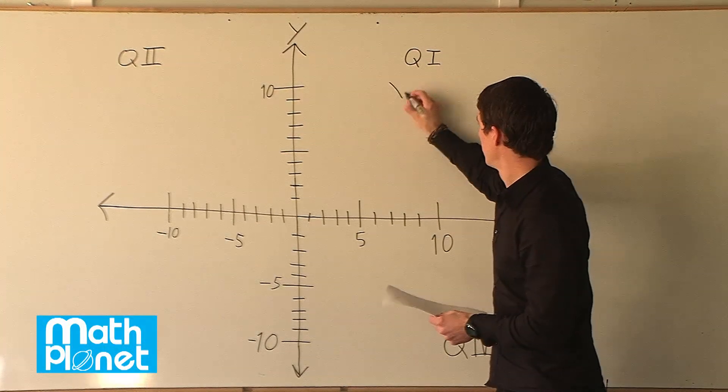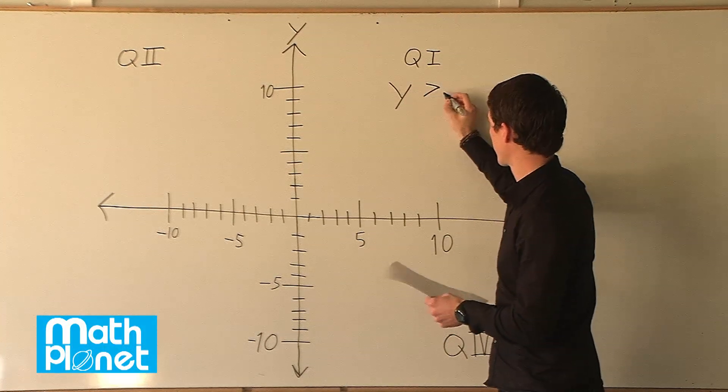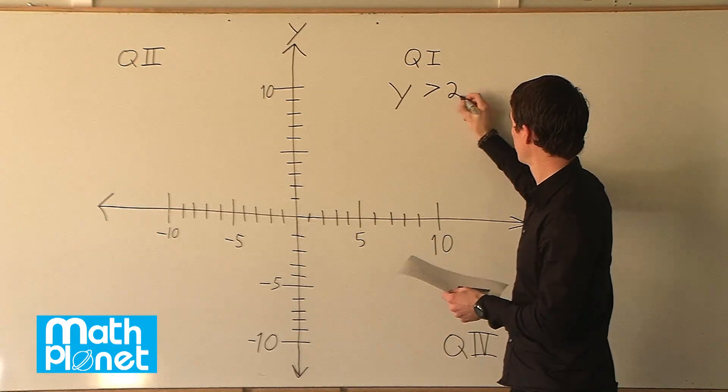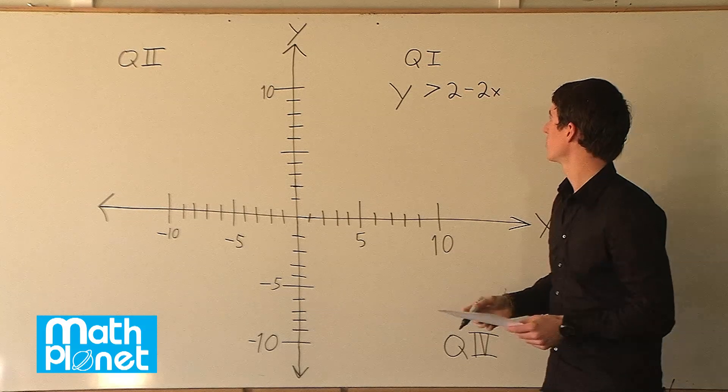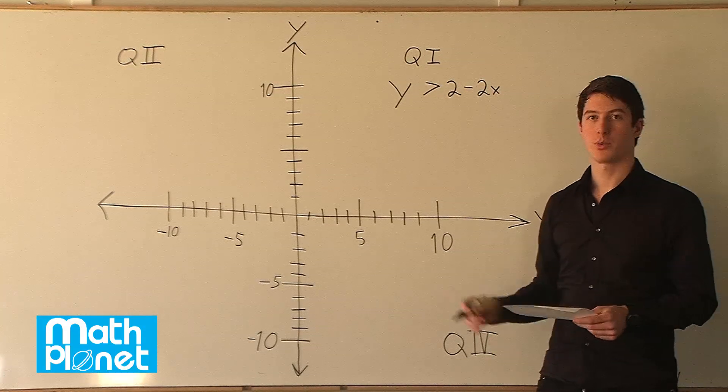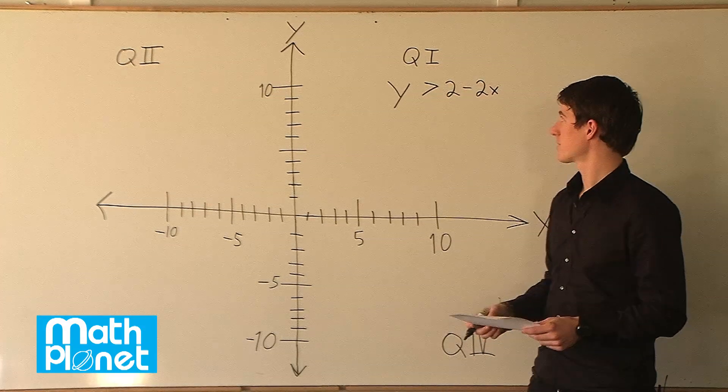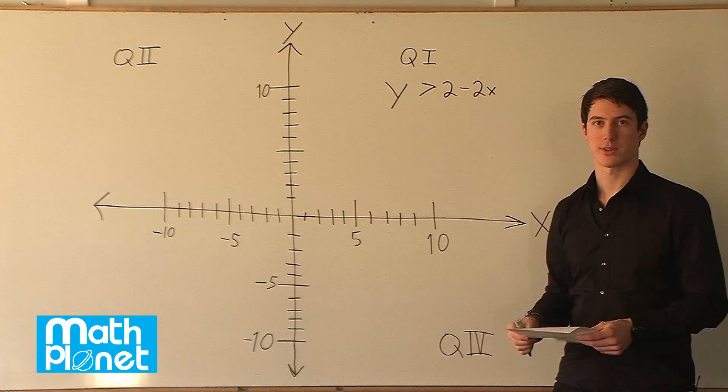Here we have the inequality y is greater than 2 minus 2x. We want to graph this inequality, and it's already written in a form that's familiar to us.